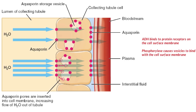As there are more aquaporins embedded in the cell membrane, more water moves from the collecting duct into the interstitial region. From the interstitial region, the water moves into the capillaries and is reabsorbed. This process is important because it prevents the body from dehydration and allows more water to be reabsorbed from the collecting duct, meaning a very small volume of concentrated urine will be produced.